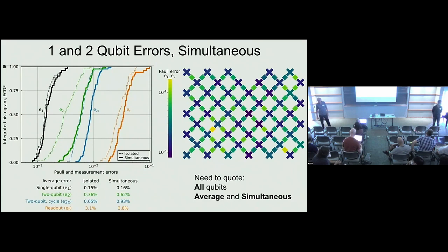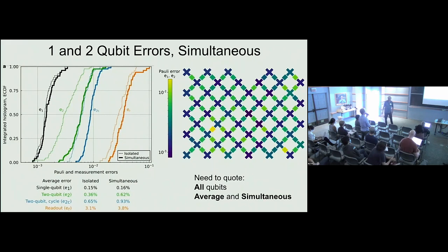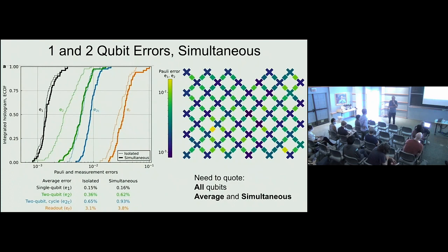Q&A: A questioner asks about works that integrate noise into algorithm design as a useful resource — not to eliminate noise but to leverage it. The speaker responds: he hasn't read papers where noise is considered good, and it surprises him. He acknowledges it's possible that certain kinds of correlated noise could be useful or that you can exploit its structure, but to him noise is fundamentally something you want to get rid of.